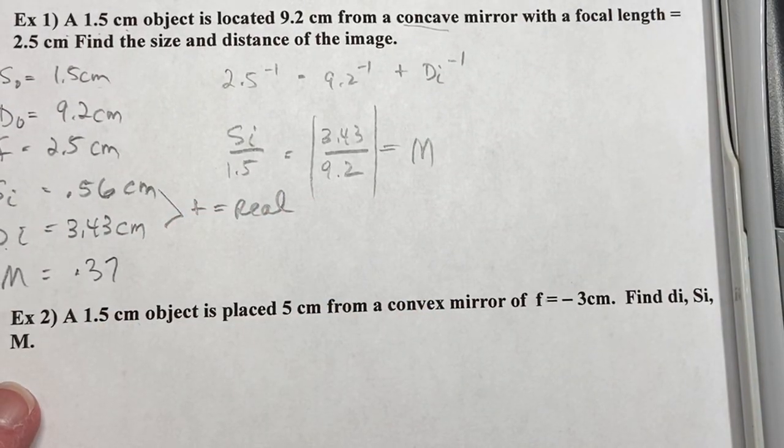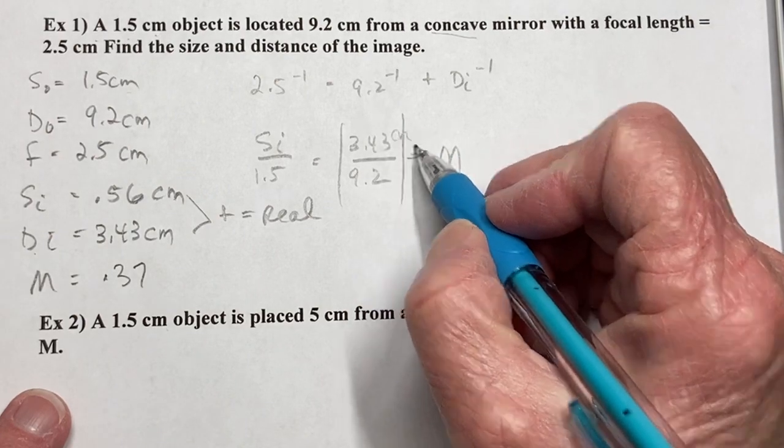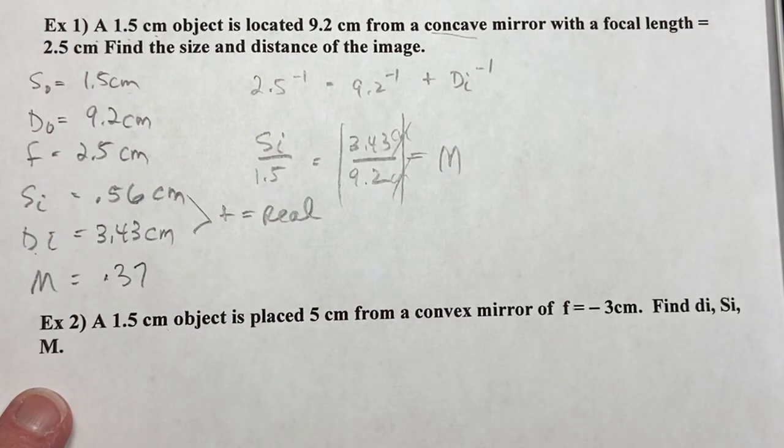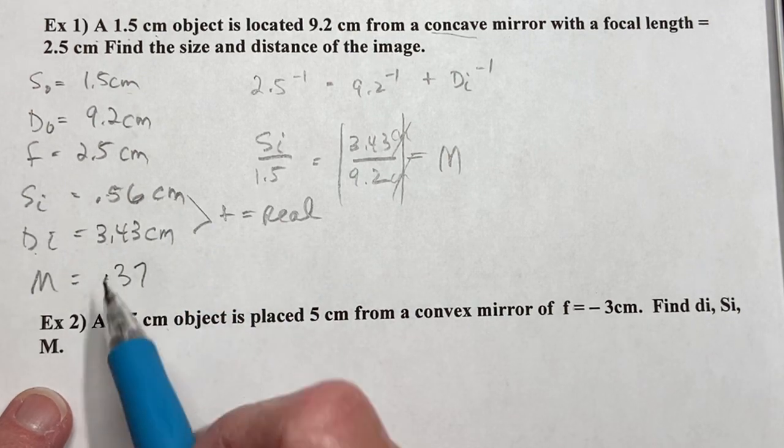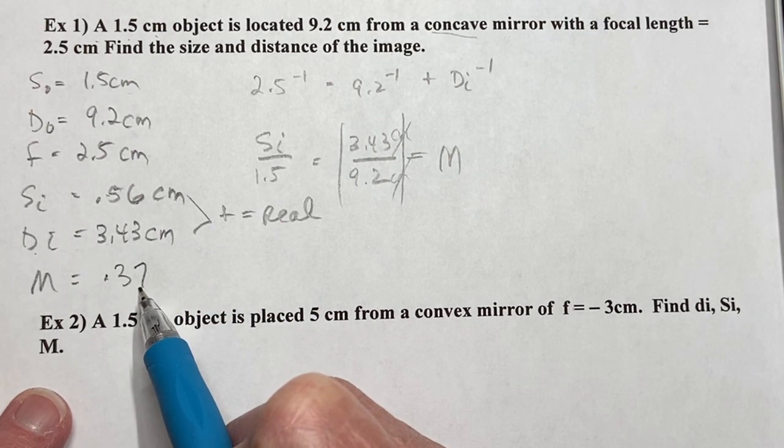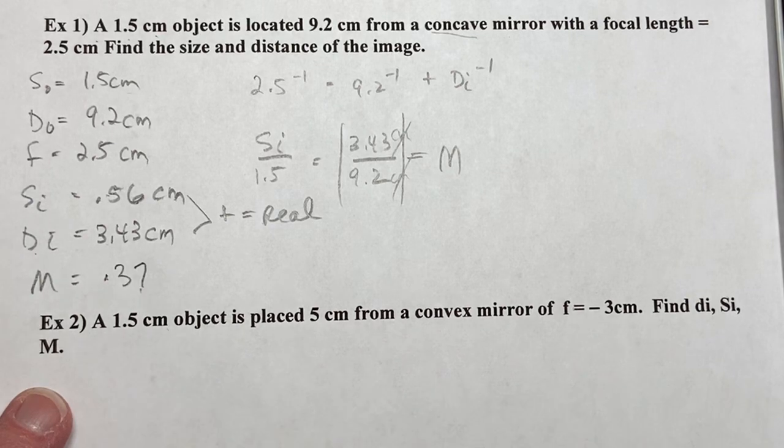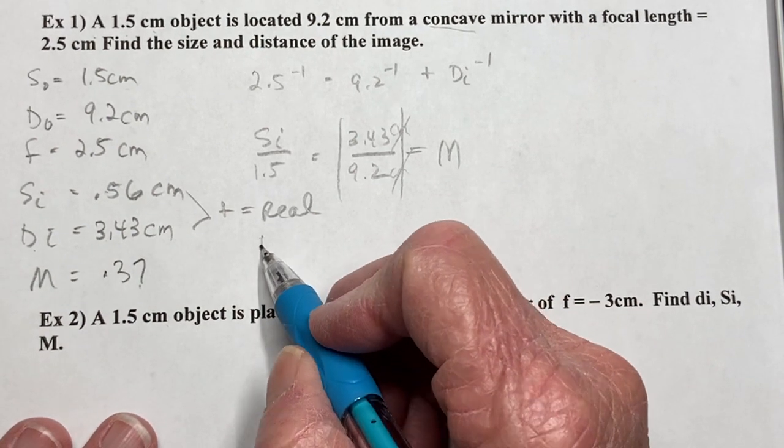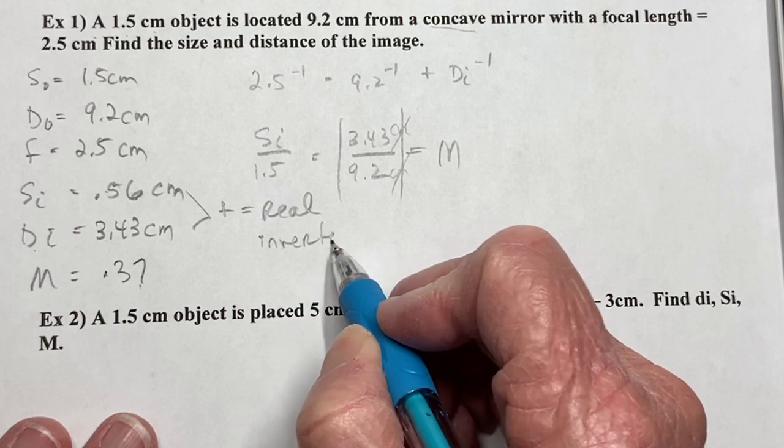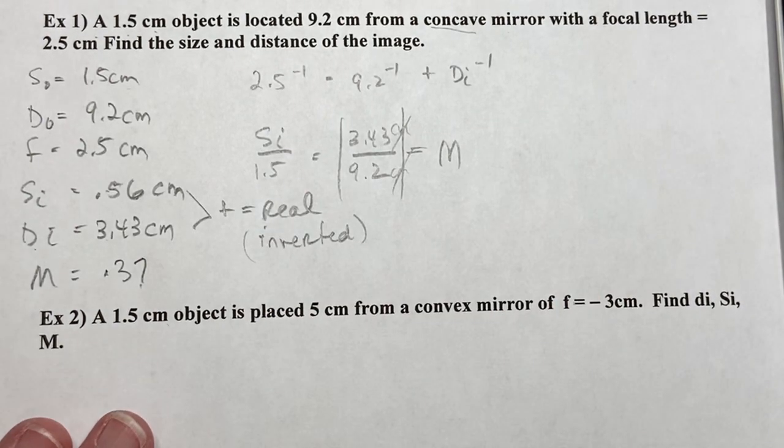There's no unit on magnification, because this would have been centimeters and centimeters, and they would have canceled. So positive si and positive di's mean a real image. Obviously, this is less than 1, so it means it's smaller. And what you don't see in here, which we can see from the drawings, is whether it's inverted or upright. All real images will be inverted. All. But they just always go together.